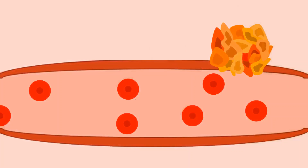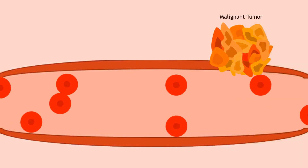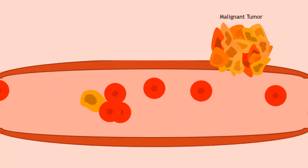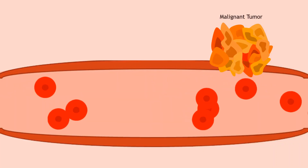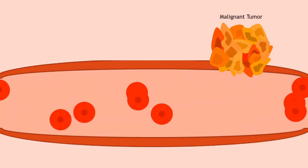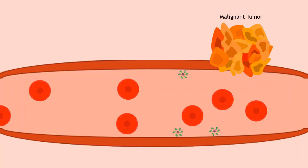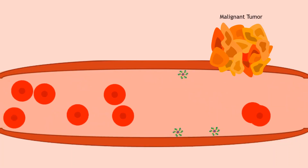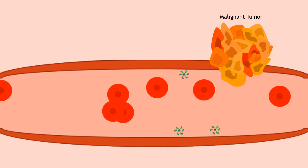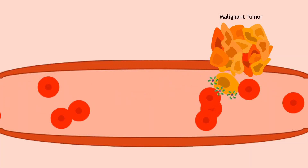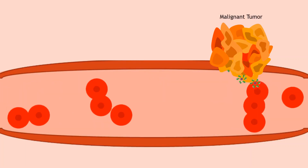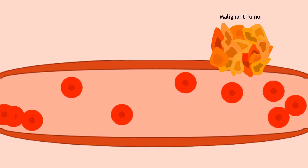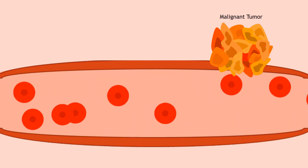Without the nanoplexes present, cancer cells from a malignant tumor can freely pass through the bloodstream, which can then lead to metastasis. Cancer cells have receptors known as CXCR4, which the nanoplex can bind to. When the nanoplexes are present, they can bind to cancer cells and significantly inhibit their migration, decreasing the chance of metastasis.